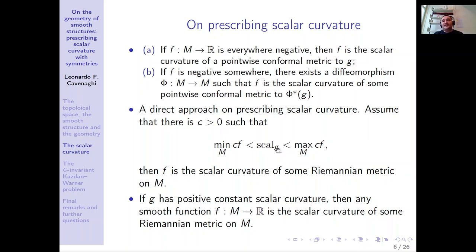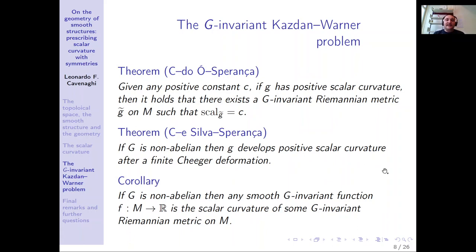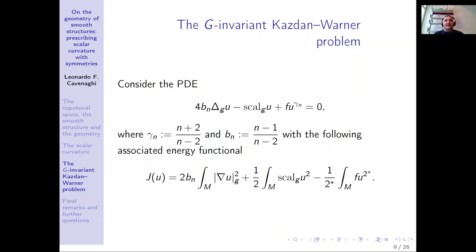I shall present this on the second part of my lecture. For now, I will mention that we obtained an analogous result to the Kazdan-Warner result in this symmetric scenario. I would like to proceed by giving some details on the proof of this theorem. The natural approach is searching for a conformal change of the initial metric leading to the following PDE, which has a nonlinear part given by the exponent (n+2)/(n−2), where n is the dimension. We associate to this equation the following energy functional.